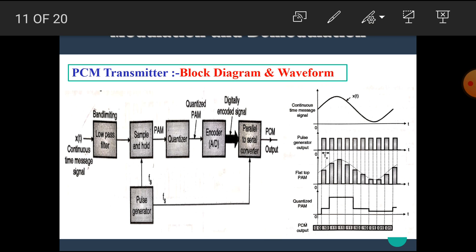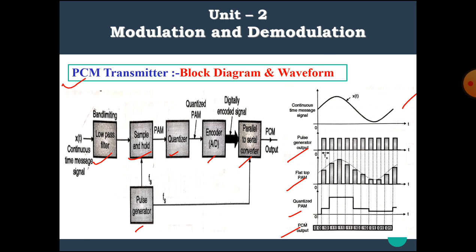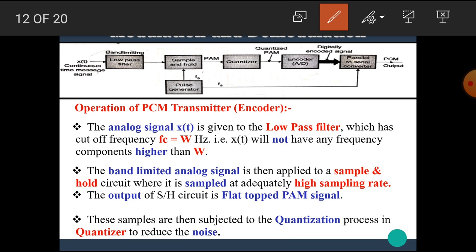Let's see the PCM transmitter or PCM encoder. This is the block diagram and waveform of the PCM encoder. The blocks include: low pass filter, sample and hold circuit, quantizer, encoder, parallel to serial converter, and pulse generator. The waveforms shown are: the continuous time signal, pulse generator output, flat top PAM, quantized PAM, and the PCM output.